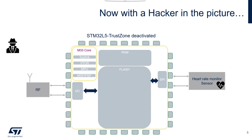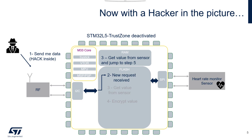Now with a hacker in the picture. The hacker will also send a 'send me data' request, but not a normal one - they will put some hack inside. When received by our code in flash, there is a weakness: this code allows a buffer overflow attack. Without going into detail, this allows the injection of code into RAM. The hacker exploits this weakness, injects code that gets the value from the sensor and skips the encryption step, sending the value in clear. The hacker then has access to the air rate monitor value - exactly what we want to protect. Furthermore, the injected code could also retrieve the secret key from flash since it is not protected either, which is even worse because the hacker could then decrypt all communications.